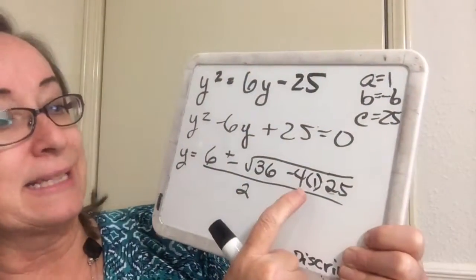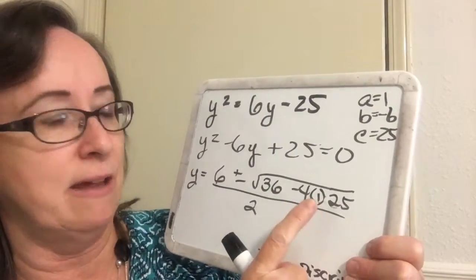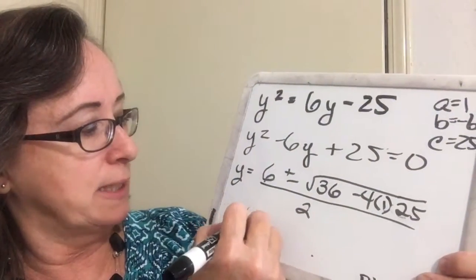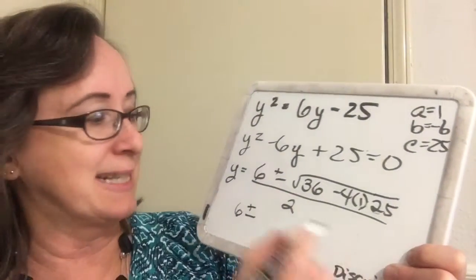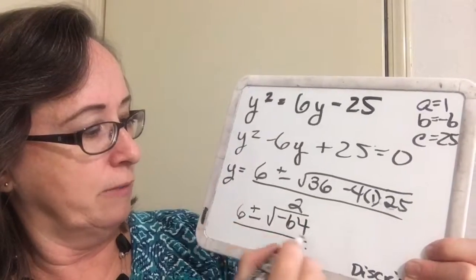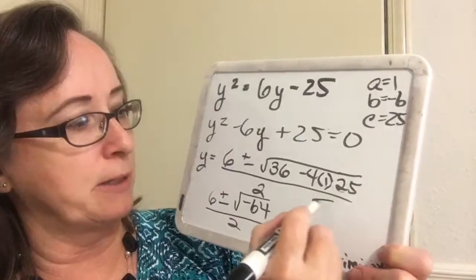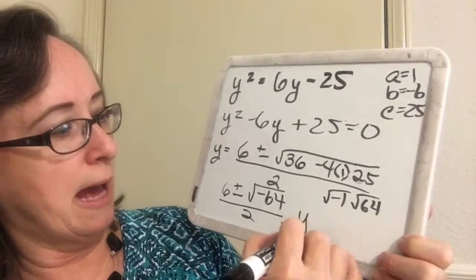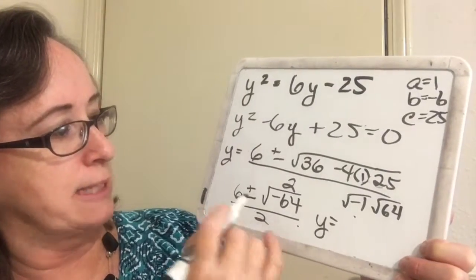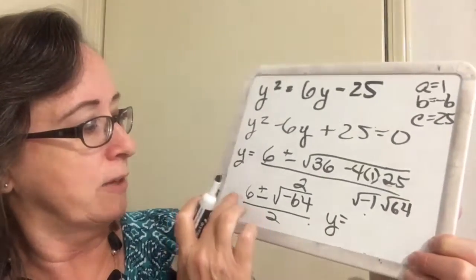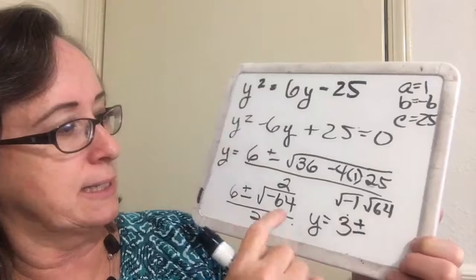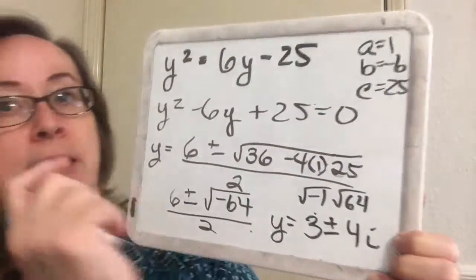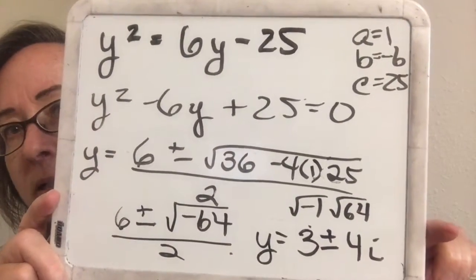Notice what happens here: 36 minus 100. We're going to have a negative number there, so that's going to mean we have the square root of a negative, which is going to be an imaginary solution. So we wind up with 6 plus or minus — 36 minus 100 is negative 64 — all over 2. The 64 is going to break up into the square root of negative 1 times the square root of 64, which is 8i. So y equals: since I've got a real part and an imaginary part I'm going to separate them. 6 divided by 2 is 3, plus or minus 8i divided by 2 is 4i. So we have 3 plus 4i and 3 minus 4i, and those are correct solutions.